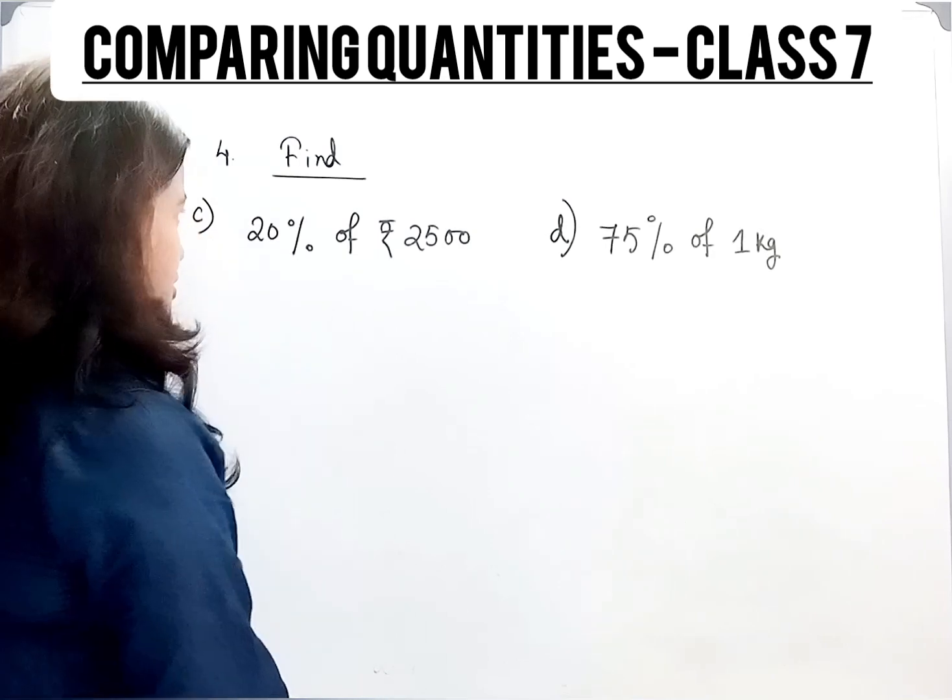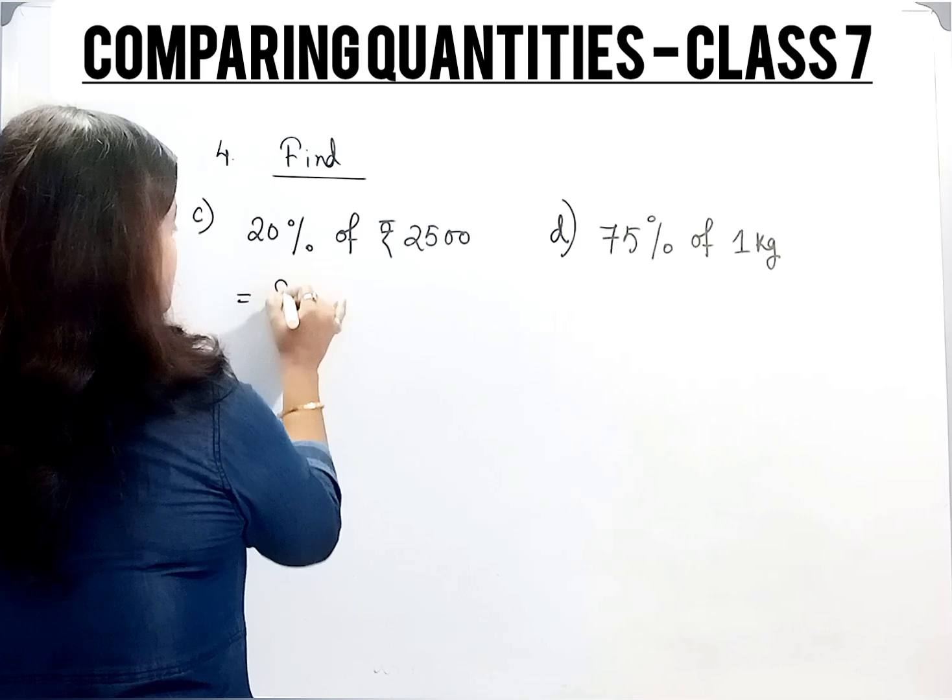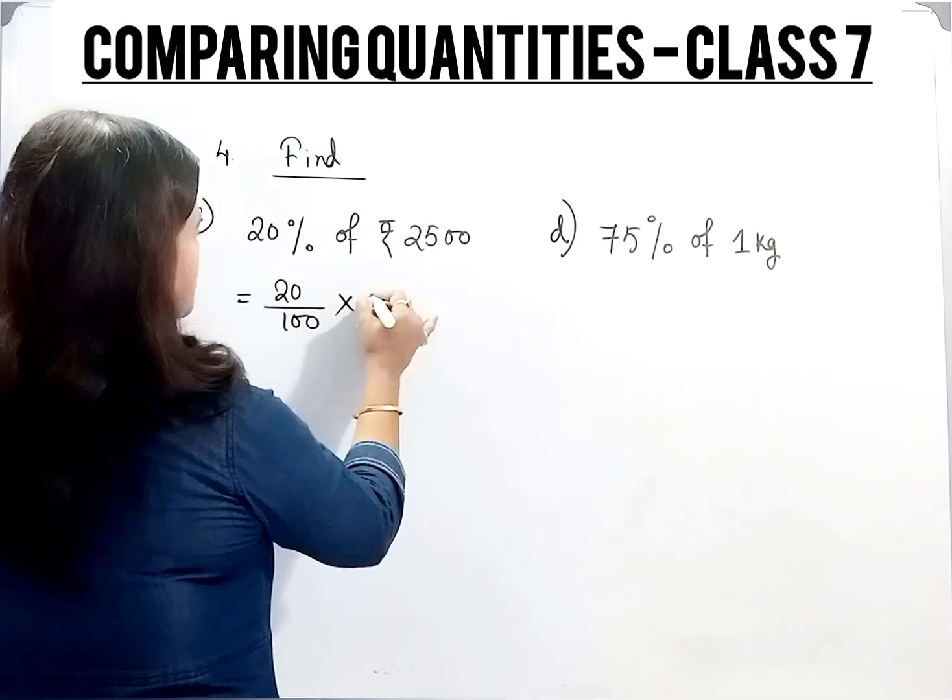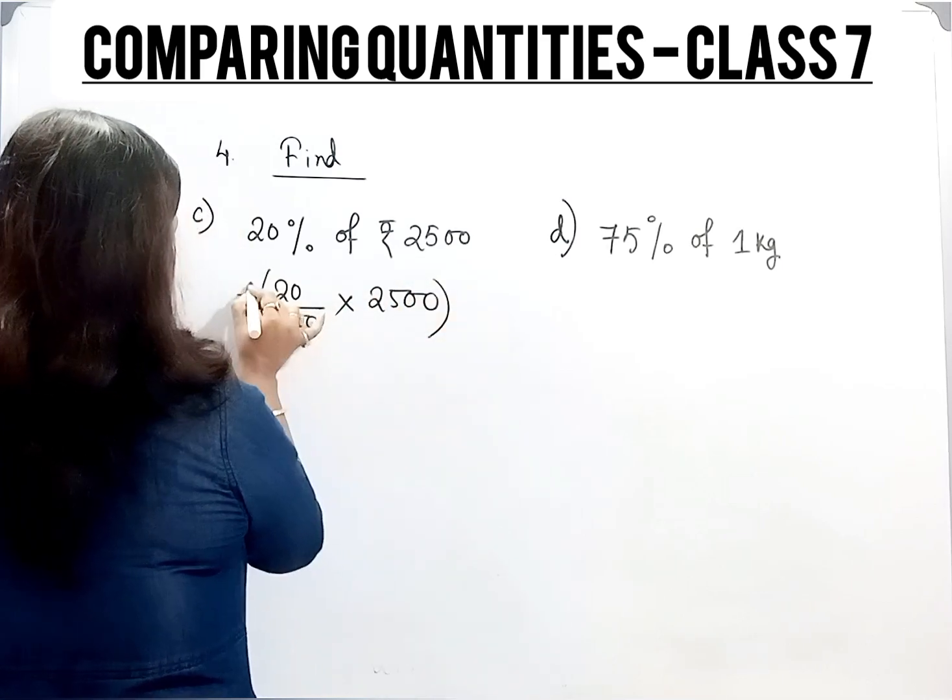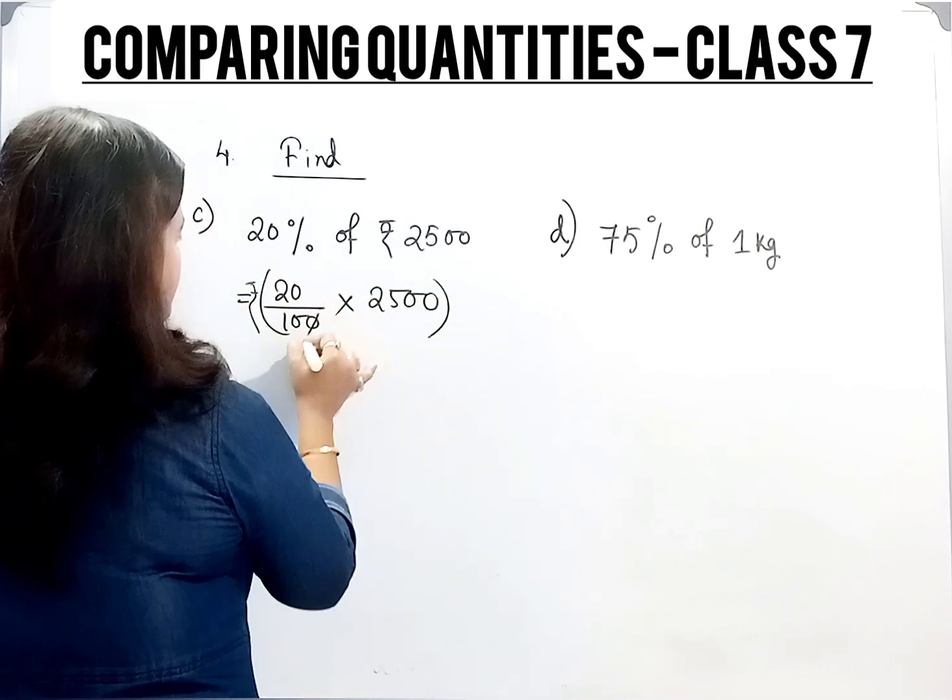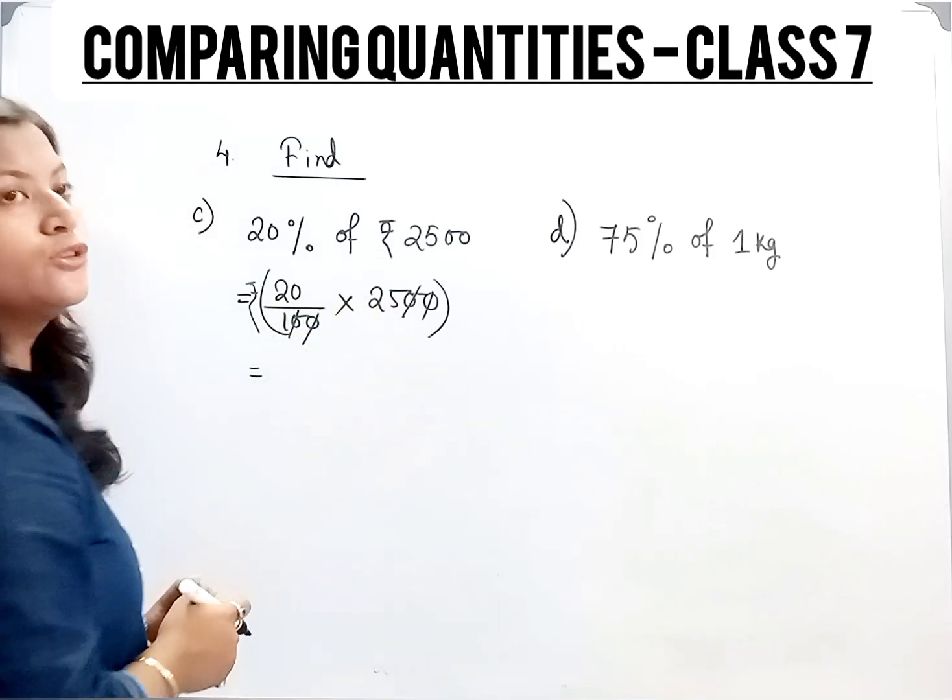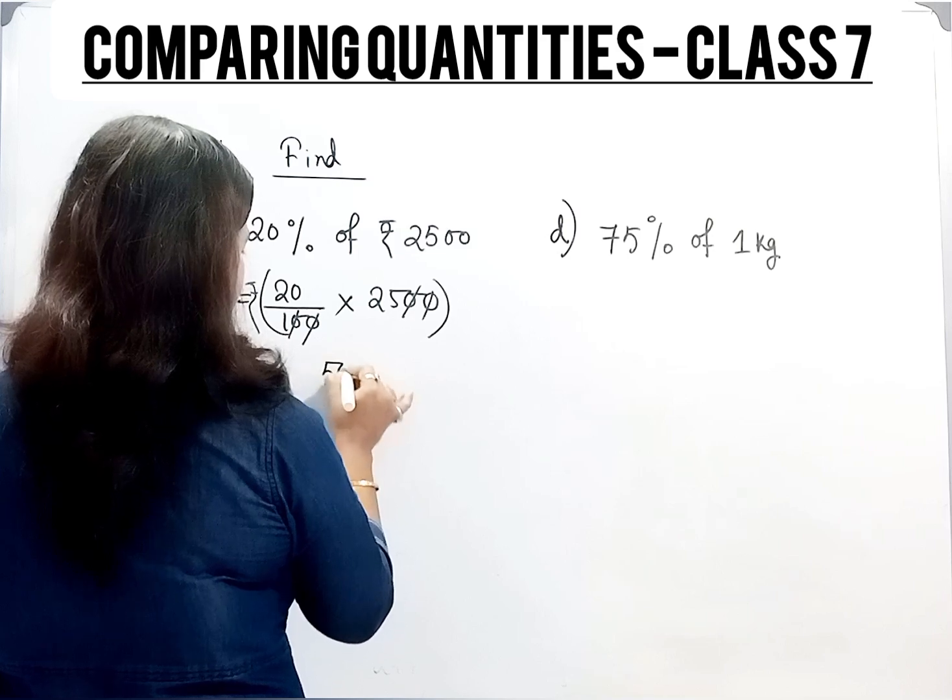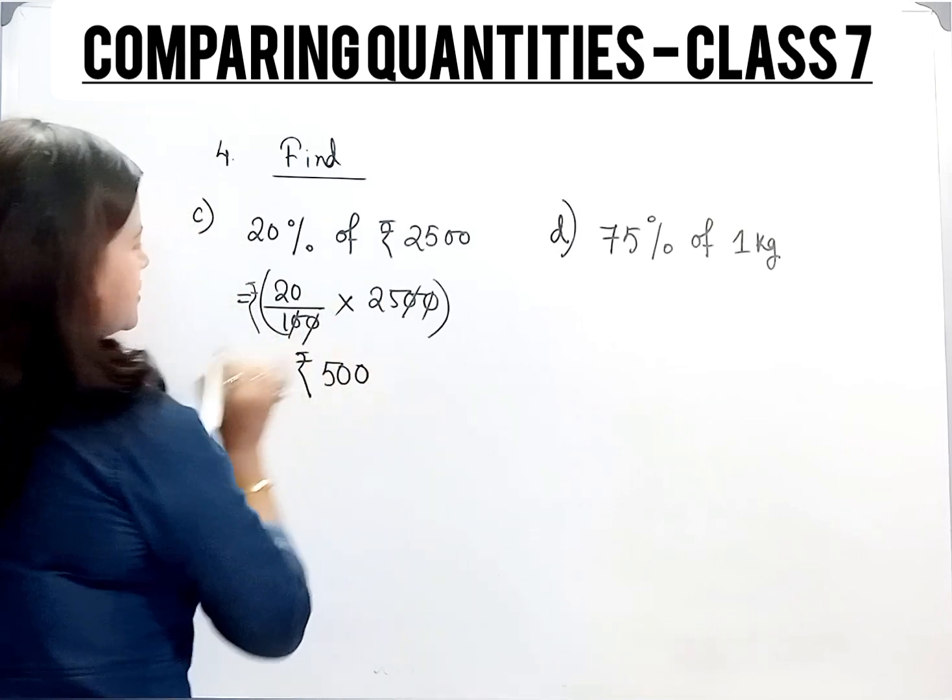Now next one. 20 percent of 2,500 rupees. So 20 percent, that means 20 divided by 100, multiplication 2,500 rupees. The zeros cancel. So 20 into 25, 25 multiplied by 2 gives 50, and adding this zero. So 500 rupees.